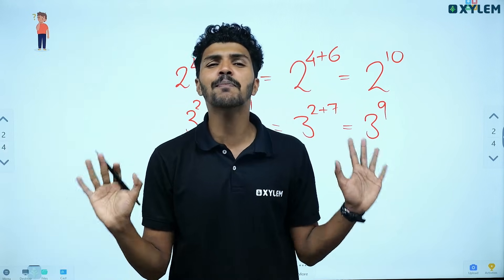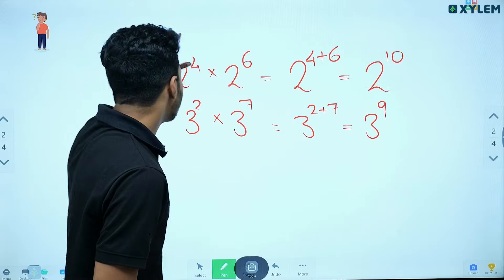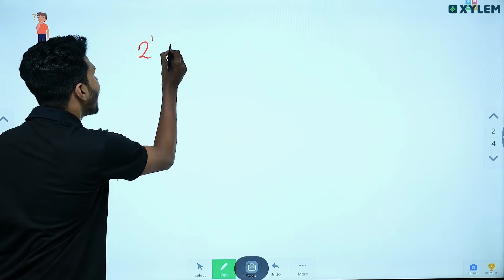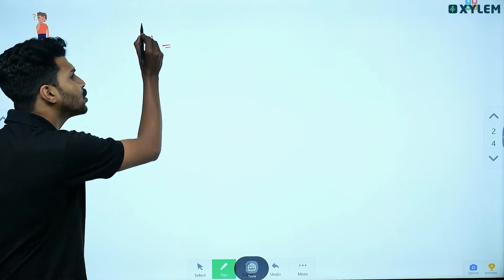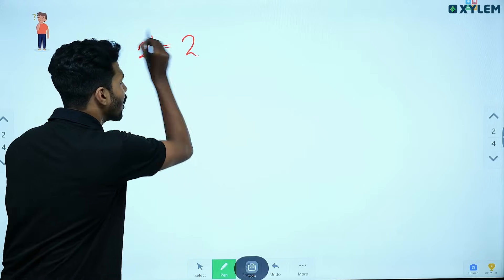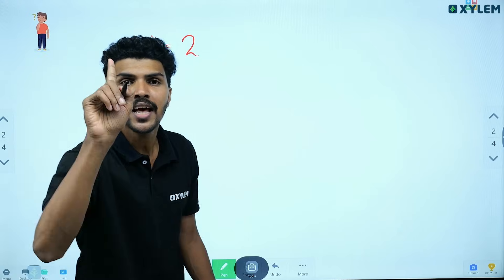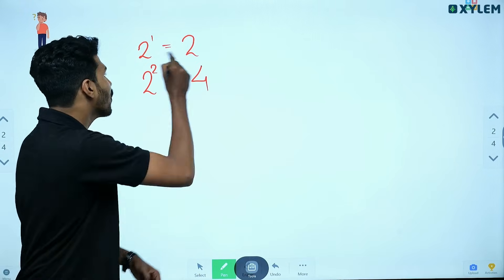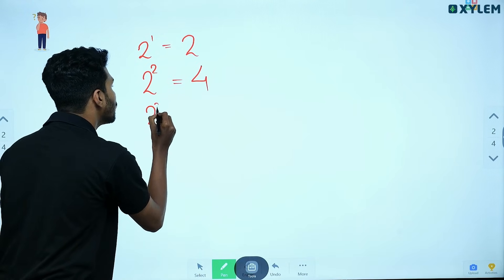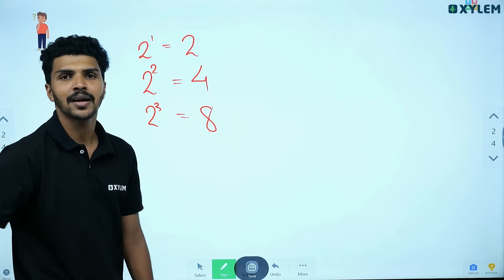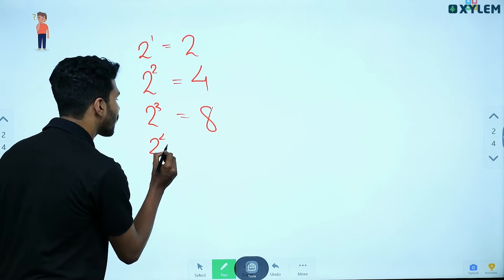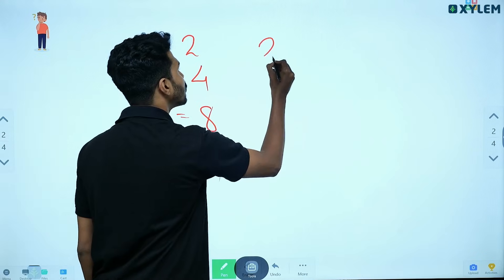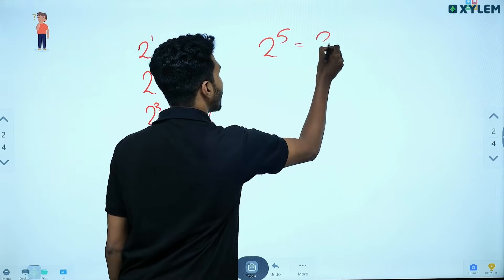Let's look at powers of 2. 2 raised to 1 is 2. 2 raised to 2, that is 2 into 2, equals 4. 2 cubed, that is 4 into 2, equals 8. 2 raised to 4 equals 16. And 2 raised to 5 equals 32.